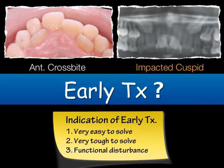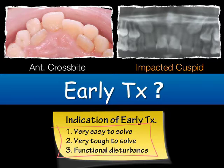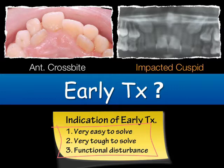Let's look at the indications. First, the case should be very easy to solve — I believe the anterior crossbite fits this criterion. Second, the case should be very tough to solve — the impacted canines fit this criterion. And for the last one, I think both of them may result in functional disturbance. So no doubt we should do early treatment.